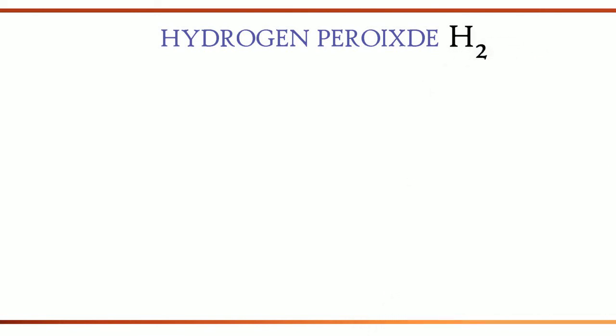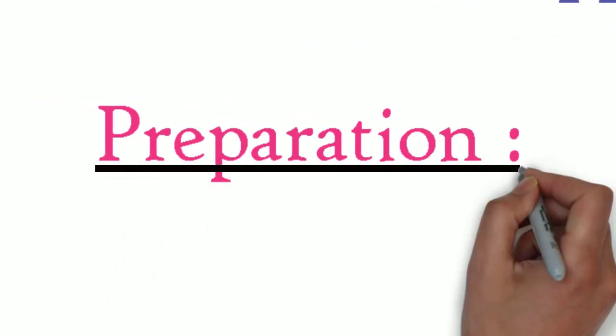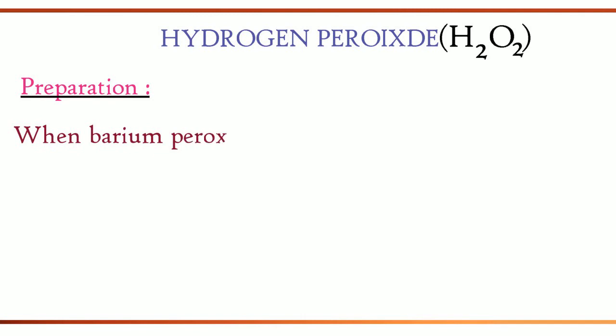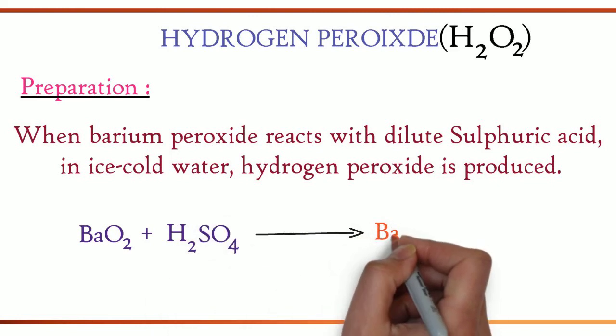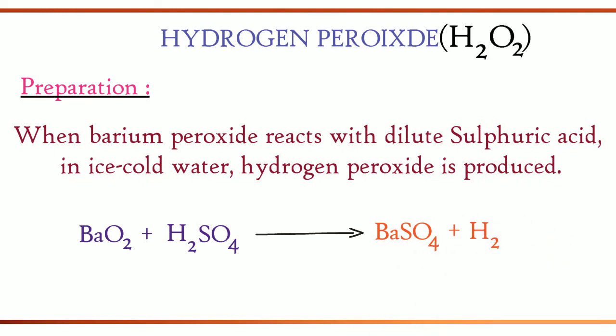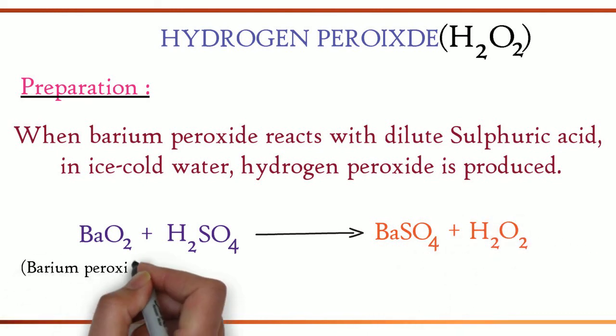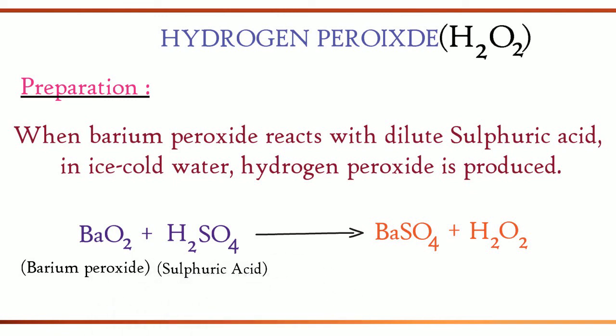The formula for hydrogen peroxide is H2O2. Now, let us see the preparation of hydrogen peroxide when barium peroxide reacts with dilute sulfuric acid in ice-cold water. Hydrogen peroxide is produced. The equation is as follows: BaO2 plus H2SO4 gives BaSO4 plus H2O2. Barium peroxide reacts with sulfuric acid to produce barium sulfate and hydrogen peroxide.